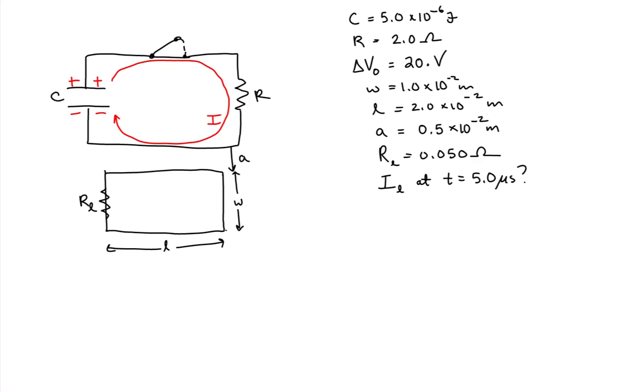And earlier we derived an expression for the current in an RC discharging circuit. And the expression we derived said that the current decays exponentially. And that exponential decay is equal to the maximum amount of current, which I'll call I0, times e raised to the minus t for time divided by the product of the resistance and the capacitance.